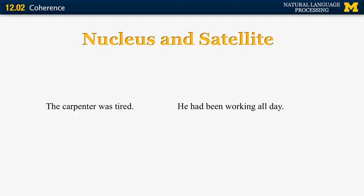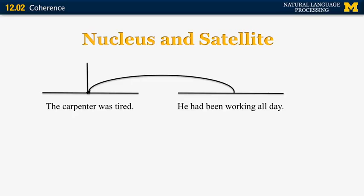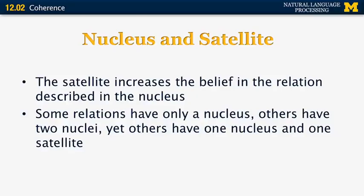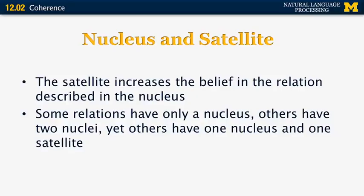You cannot start with 'he.' So in RST, the relation between those two sentences is determined as follows: 'He had been working all day' is a satellite in relation to the nucleus 'The carpenter was tired.' The nucleus is more important than the satellite. So if we wanted to summarize this paragraph, we would probably want to pick the nucleus before the satellite. The satellite increases the belief in the relation described in the nucleus. Some relations have only one nucleus, others have more than one, and others have one nucleus and one satellite.